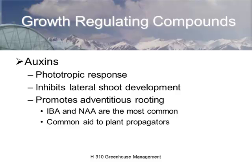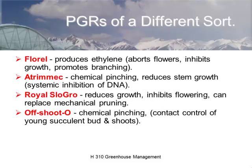Some people think auxin doesn't directly stimulate adventitious rooting, but instead stimulates ethylene generation, which then stimulates root development. The literature is mixed on that. One important synthetic auxin is 2,4-dichlorophenoxyacetic acid, or 2,4-D, which is actually an auxin herbicide. It stimulates auxin-like activity, causing plants to overgrow themselves and essentially grow themselves to death.